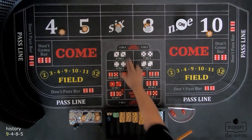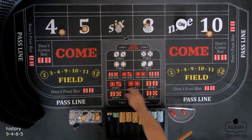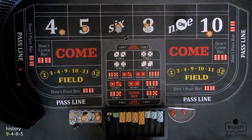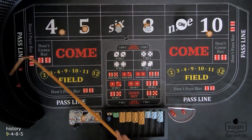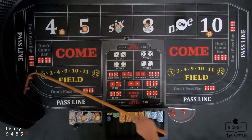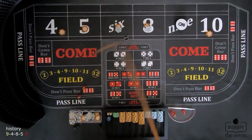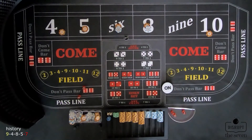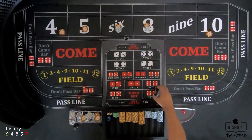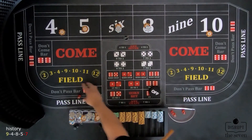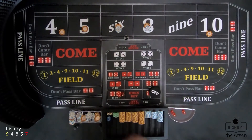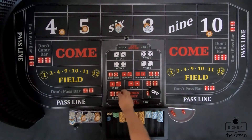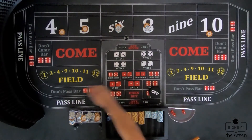We tell the dealer we want the bets off. The shooter throws — 4-3, 7 out. This is good — our bets were off so we don't get affected. Everyone else — too bad for them. A new shooter comes around.